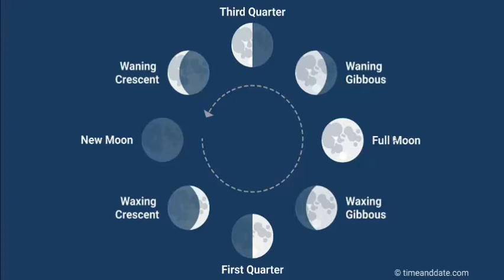At full moon, the entire moon is visible. Then it starts decreasing — waning begins. Waning means decrease. Then waning gibbous, because the moon is still more than half. Then third quarter, when the moon is half again. Then waning crescent, as the moon continues decreasing.